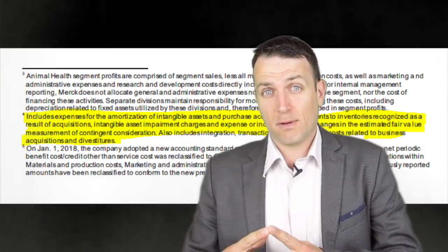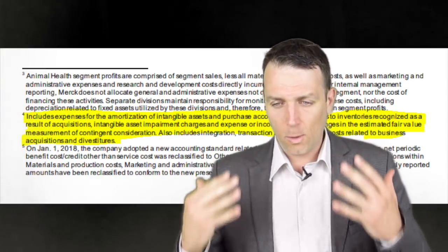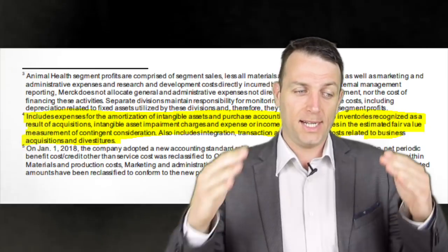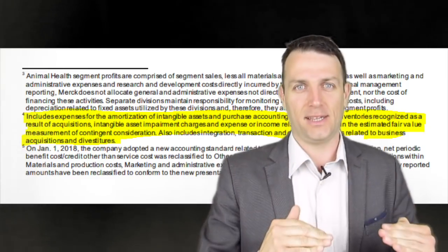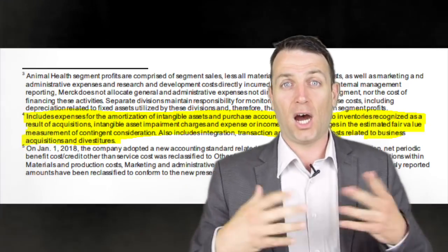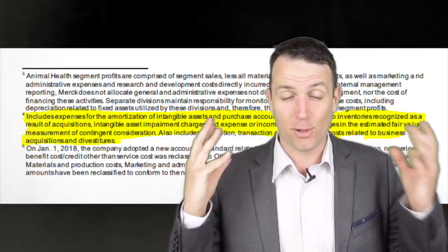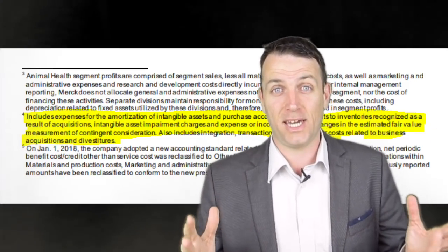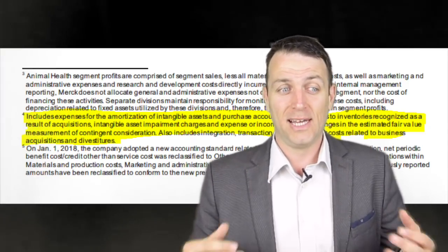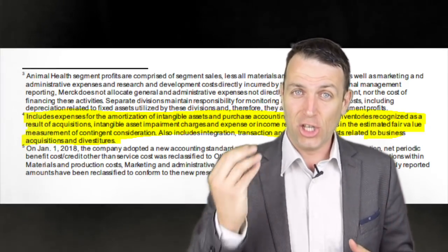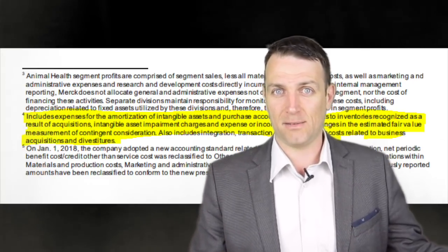As for what to do, Graham makes it really simple: always, always, always take the lowest earnings number — that's the real number. All the adjustments are smoke in the air for analysts, investors, or whoever has no real interest in the business but only an interest in selling you something.